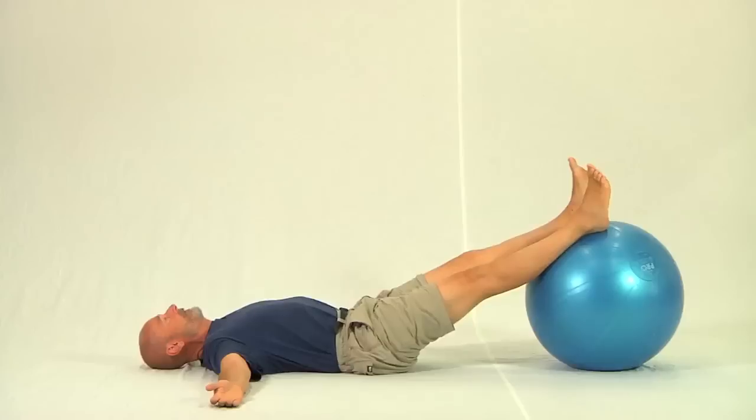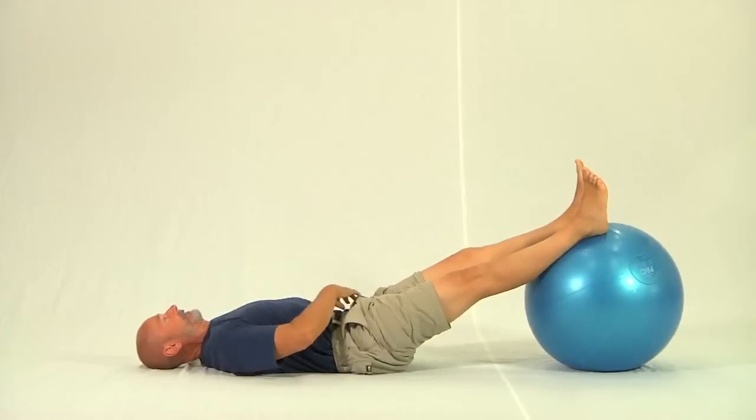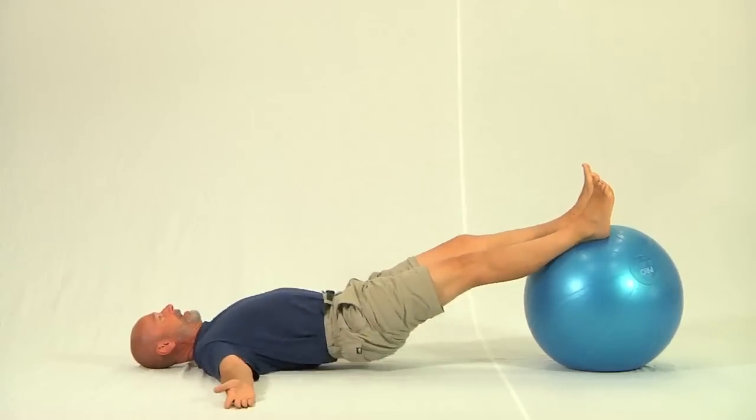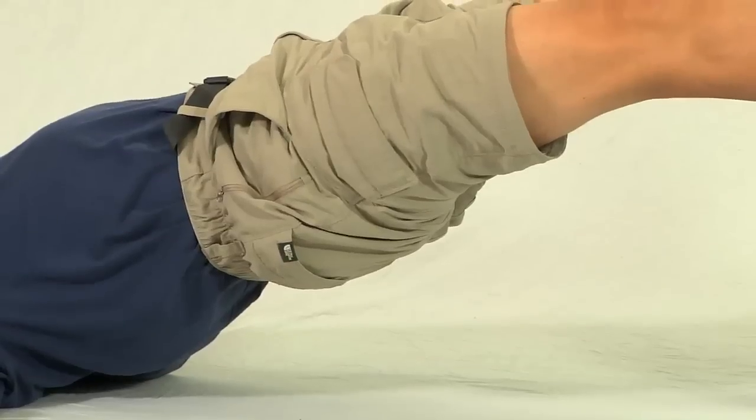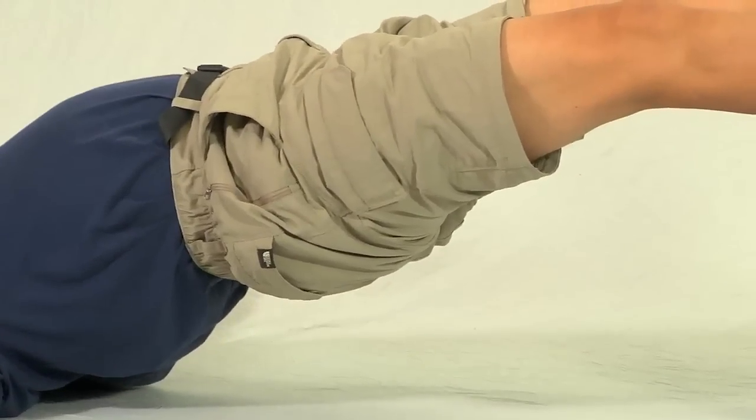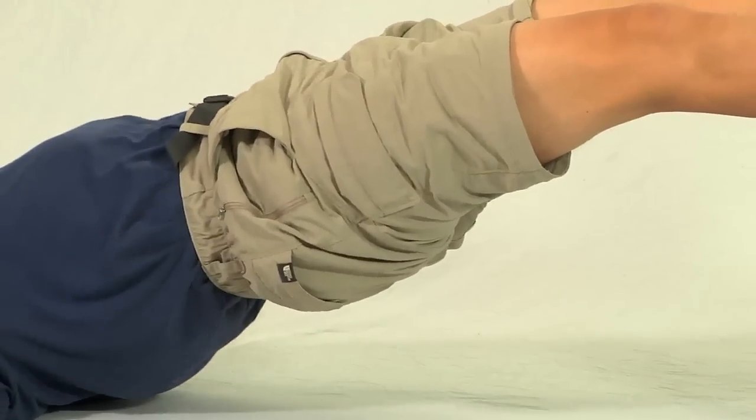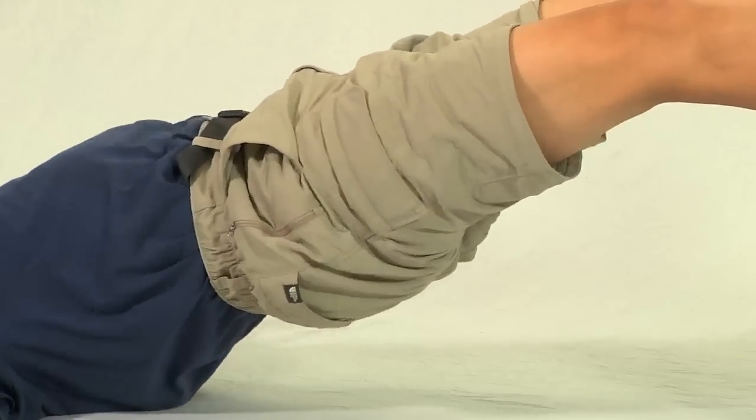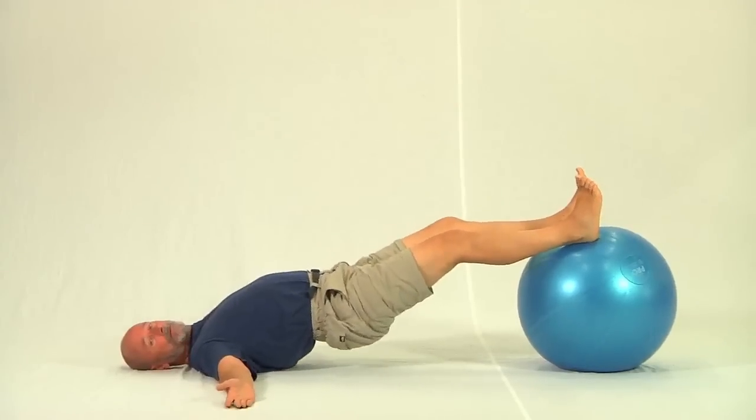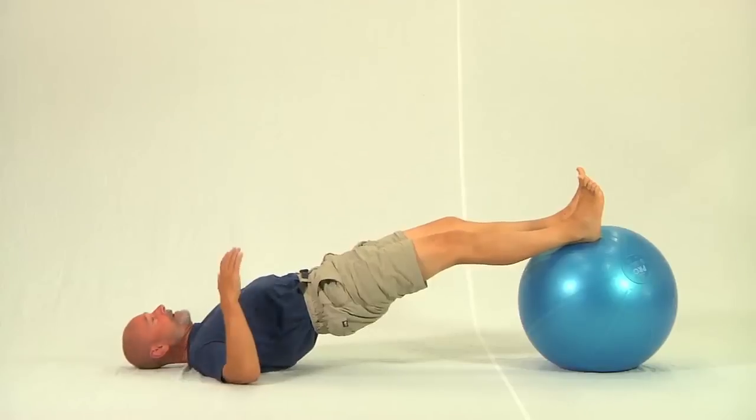From here we follow the same cues: tuck tail, lift chest, make sure TA is activated, and we pull ourselves to here. Now watch this. I'm going to arch the back backwards, neutral, and tuck the tail. This action when the spine is under load is what we want to be able to do.